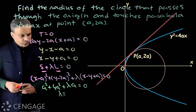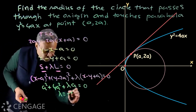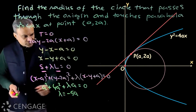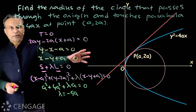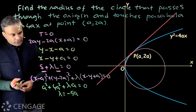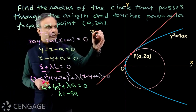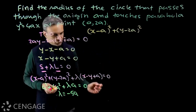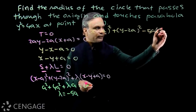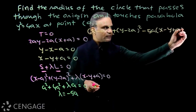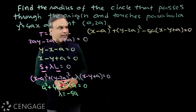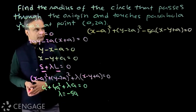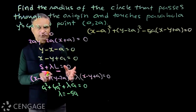From this, we get λ = -5a. We substitute this value of λ back into the family equation to get the equation of the required circle: (x - a)² + (y - 2a)² - 5a(x - y + a) = 0.